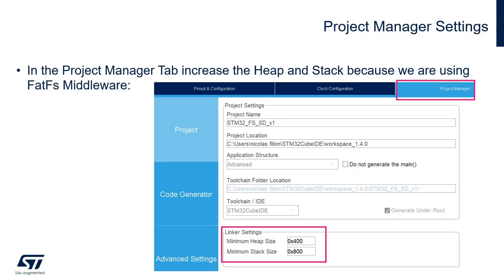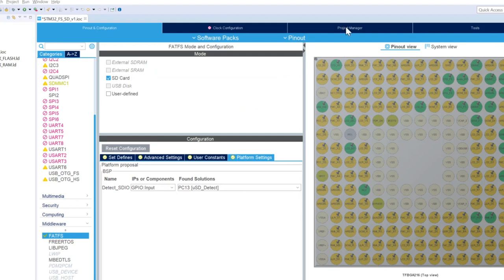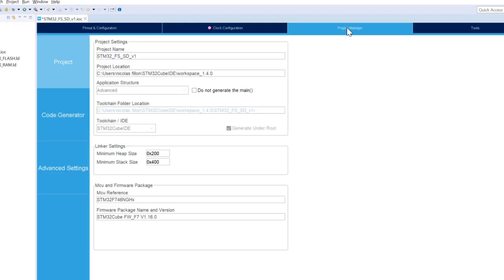In the Project Manager tab, we are going to increase the minimum heap size and the minimum stack size. Because we're using the FATFS middleware, we recommend increasing the minimum heap size to 0x400 and the minimum stack size to 0x800.